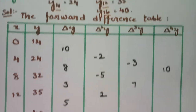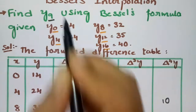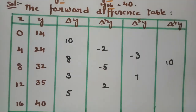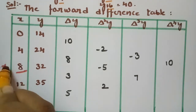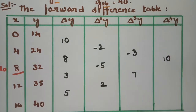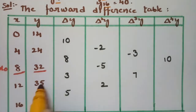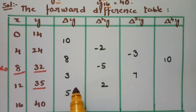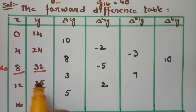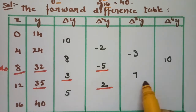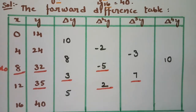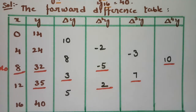We need the value of y₉. The nearest x value to 9 is 8, so we take x₀ = 8. That makes the corresponding value y₀, and the next one y₁. For Bessel's interpolation formula we have to take double, single, double, single, and double values at a time.